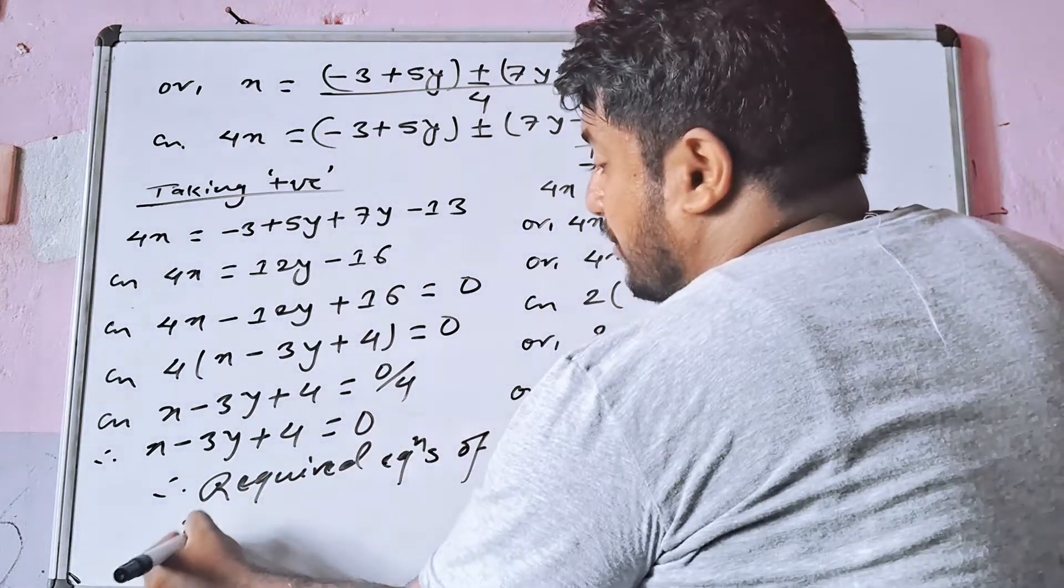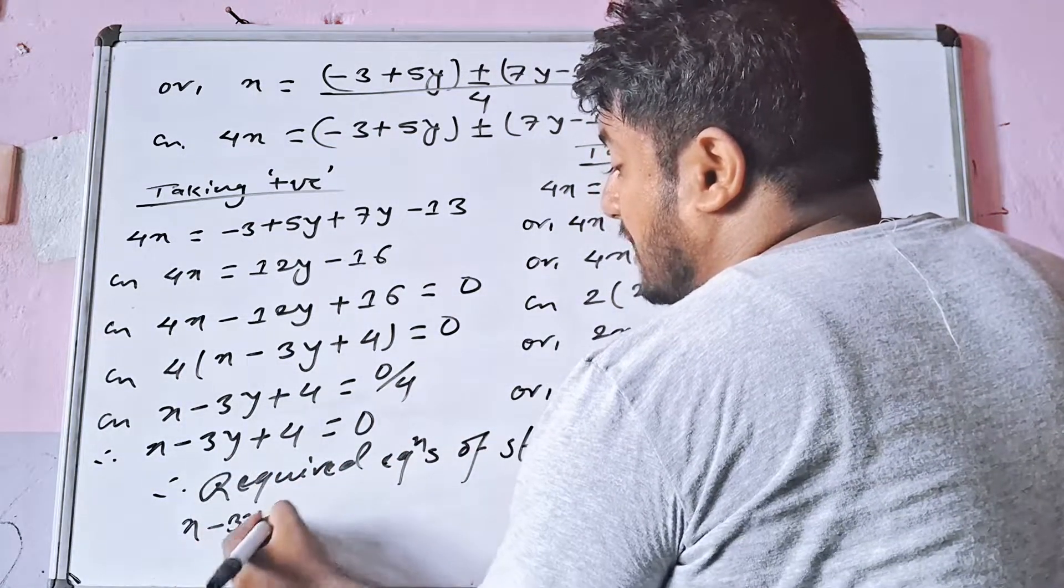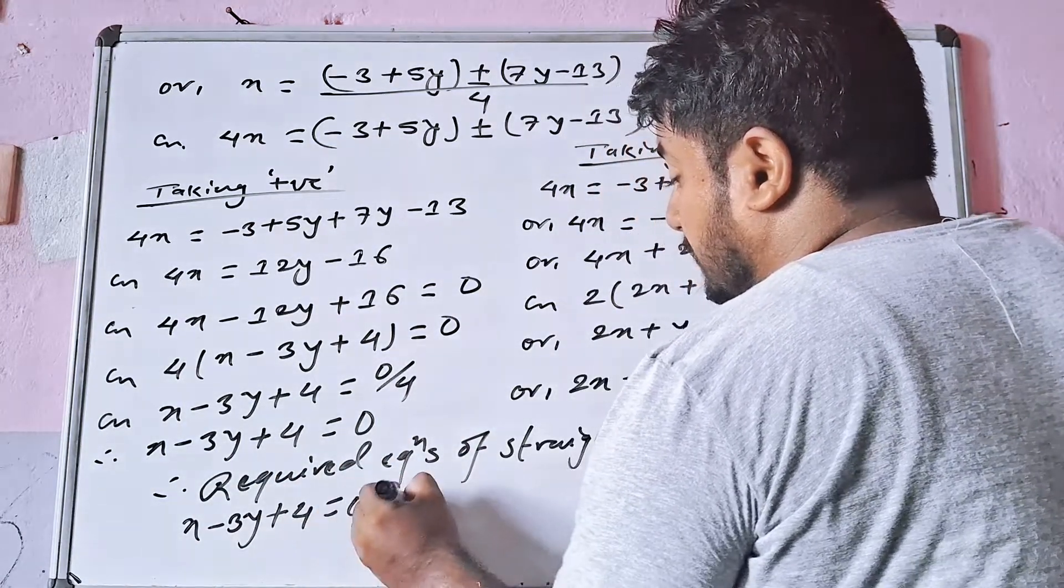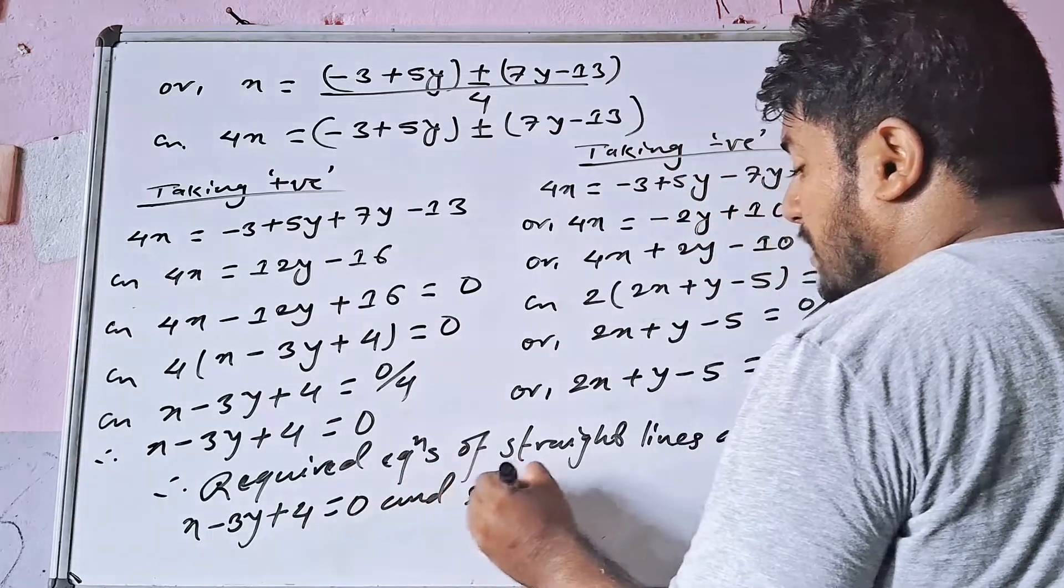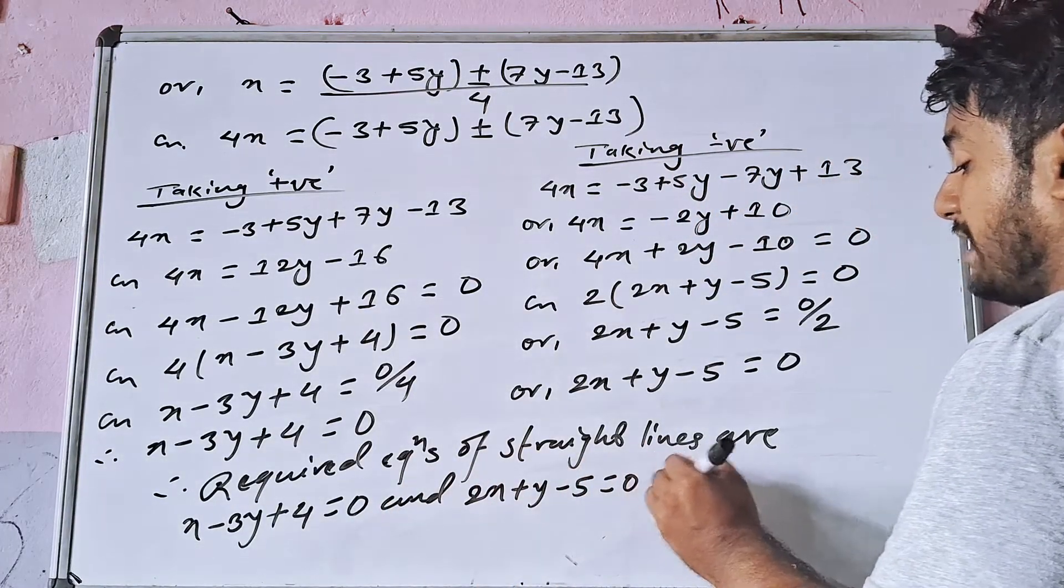Therefore, required equations of straight lines are x minus 3y plus 4 equal to 0, and 2x plus y minus 5 equal to 0 respectively.